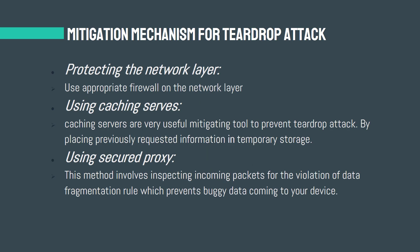Let me describe some mitigation mechanisms to prevent your organization from this type of attack. The first one is protecting the network layer. The teardrop attack is a network layer attack, so your system must defend it at all costs. You can use a proper firewall network which filters junk data. The second one is using cache servers. Caching servers are very useful mitigation tools to prevent teardrop attacks by placing previously requested information in temporary storage.